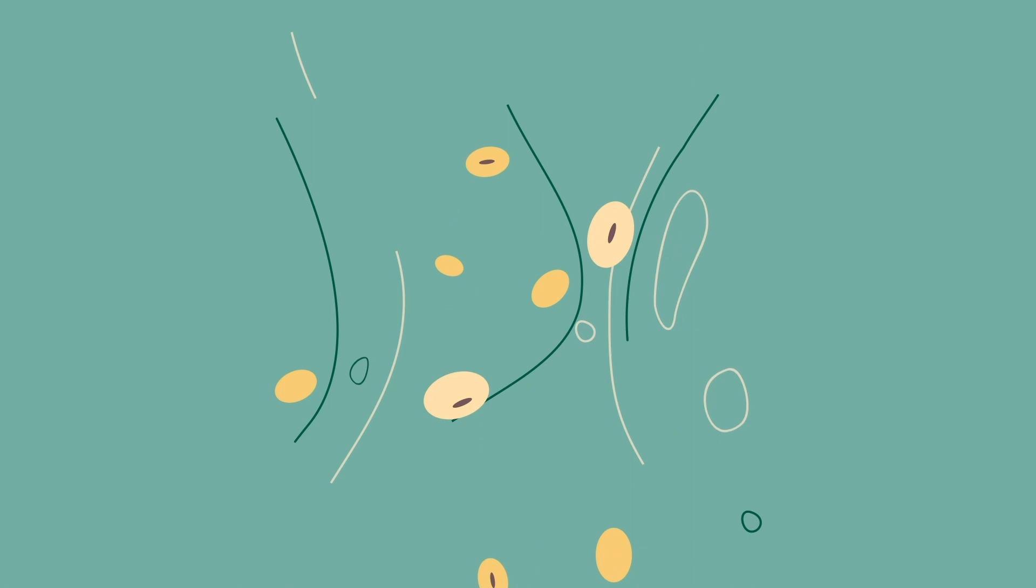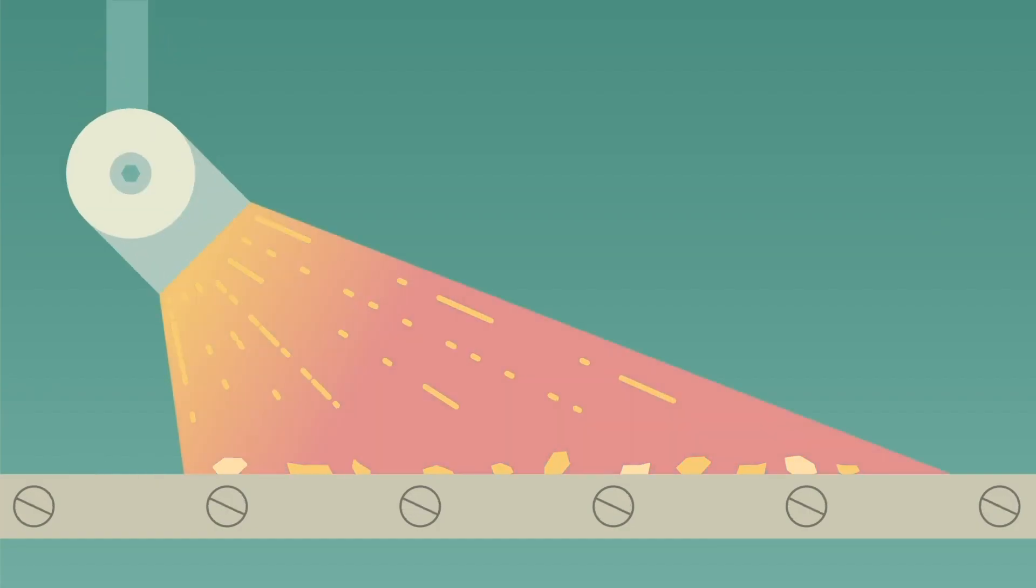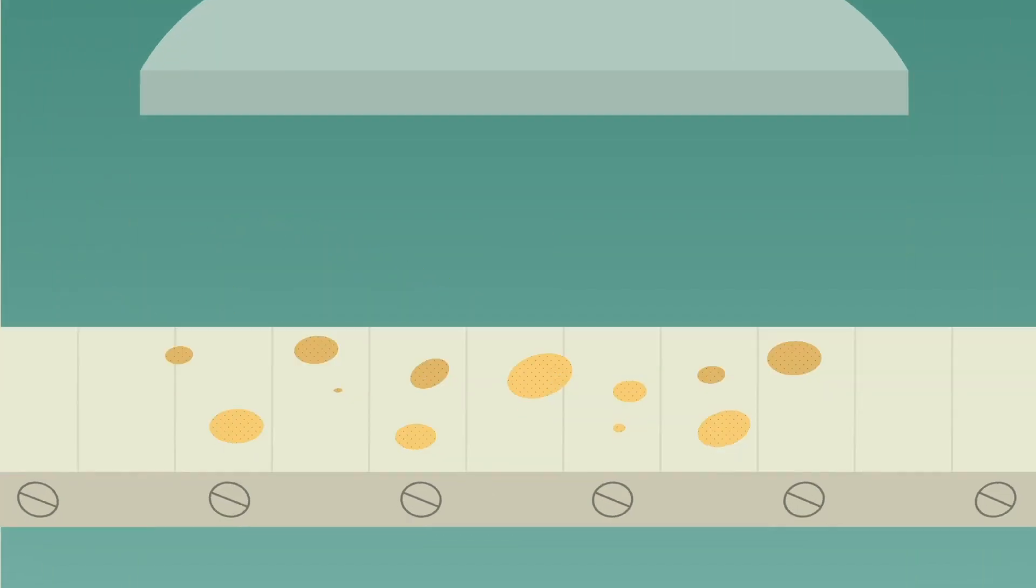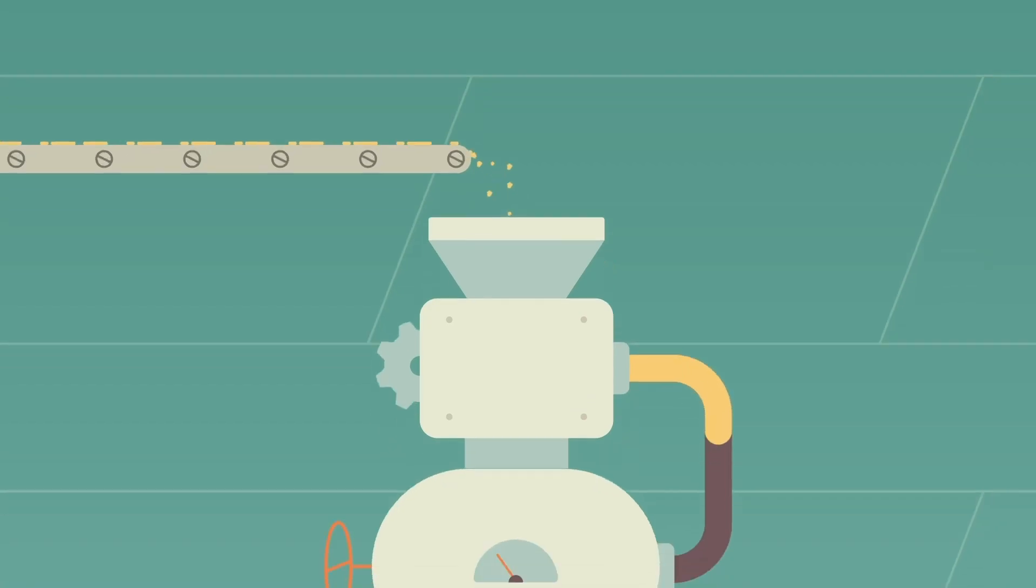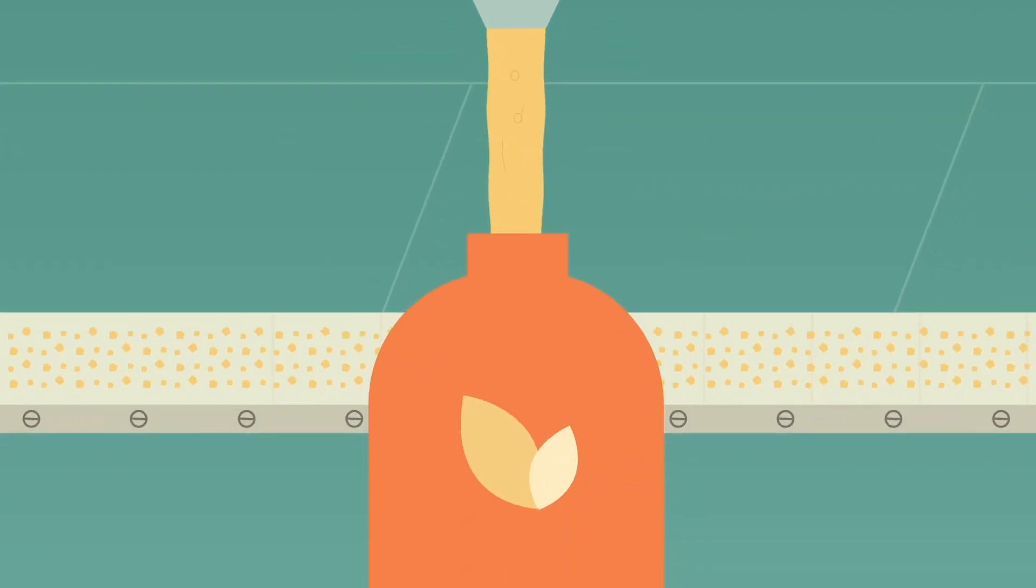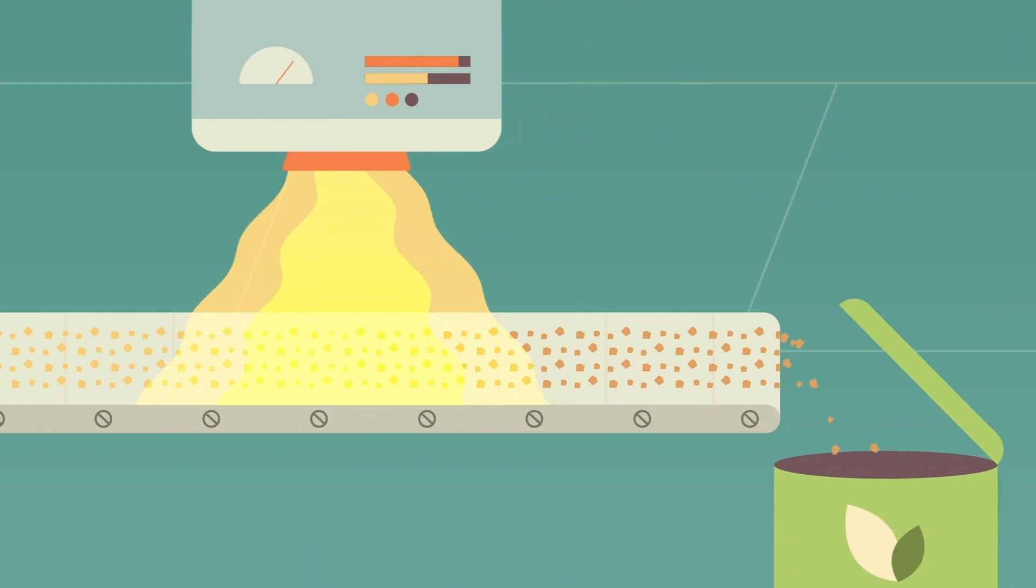This complex process cleans, cracks, and dries the seeds before being flattened into flake. Some of the flake is stripped, distilled, and refined into oil, and the rest is toasted and dried to become meal.